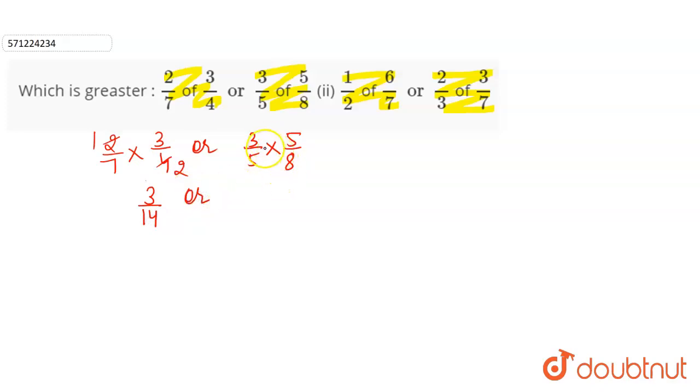So 3 by 14, or 5 got cancelled, so 3 by 8. Now if you can observe, the denominator of both the fractions are different. So we have to take the LCM to make the denominator equal.